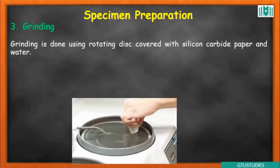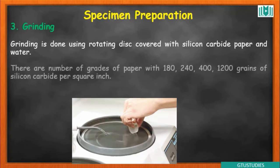The next step is the grinding process. Grinding is done using a rotating disc covered with silicon carbide paper. The grinding process uses heating and cooling. There are a number of grades of paper available — for example, 80, 240, 400, and 1200 — where the grade number indicates the number of grains of silicon carbide per square inch.